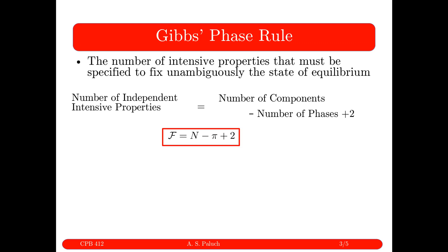If I had a binary mixture in two-phase coexistence, one might think through the same exercise: for each phase I need temperature and pressure, plus N minus 1 independent mole fractions. I'd have one mole fraction per phase, that's 2, plus temperature and pressure uniform throughout — giving 4 degrees of freedom. But that's not the case. If I apply the Gibbs Phase Rule for that two-phase binary system: N equals 2, pi equals 2, so 2 minus 2 plus 2 equals 2. So what gives — why do I need fewer degrees of freedom than that thought exercise suggested?